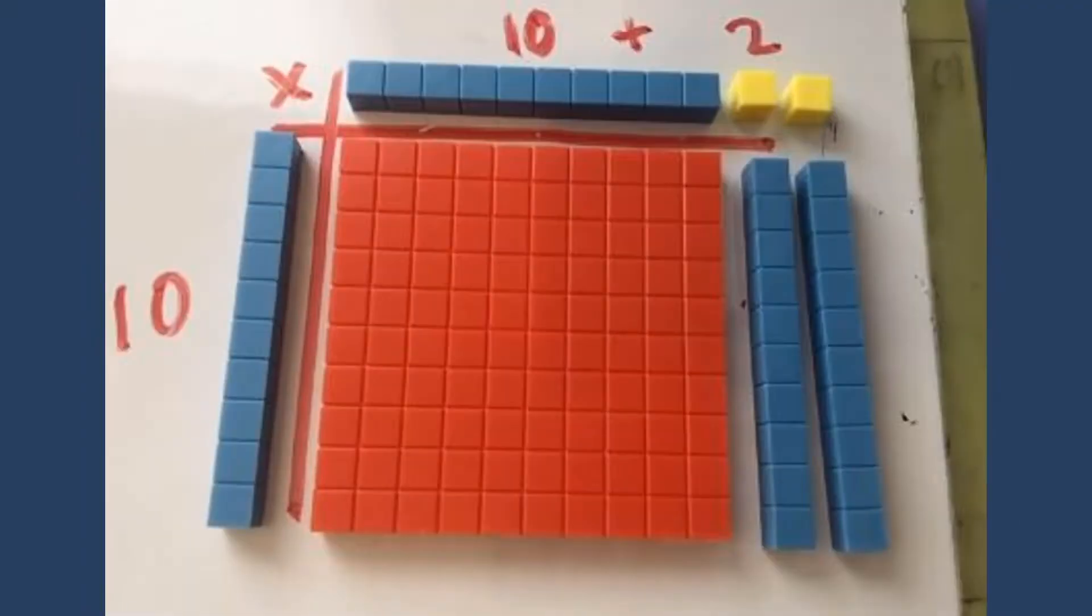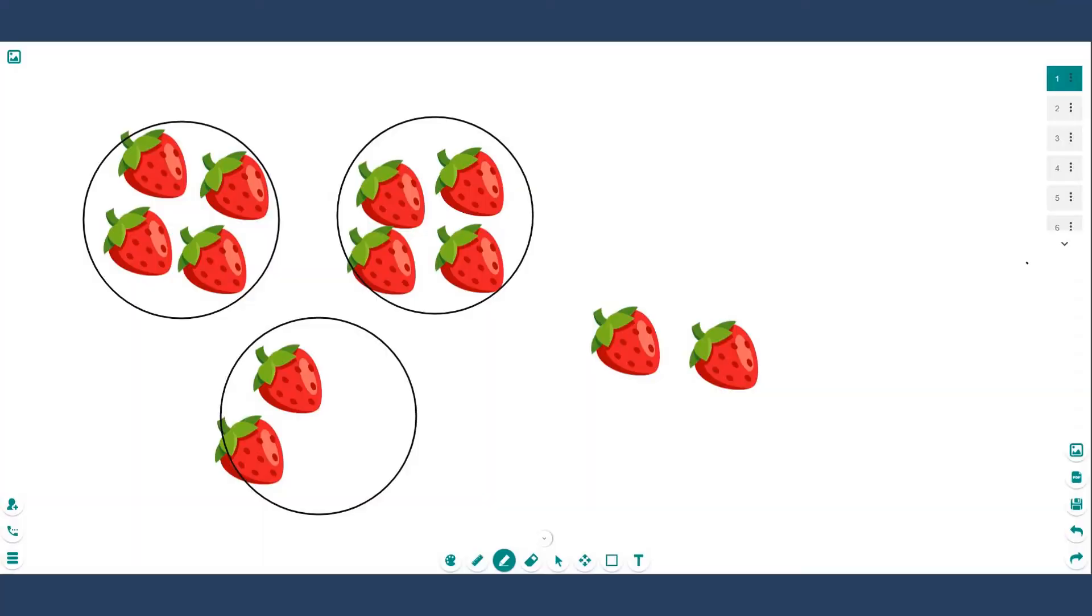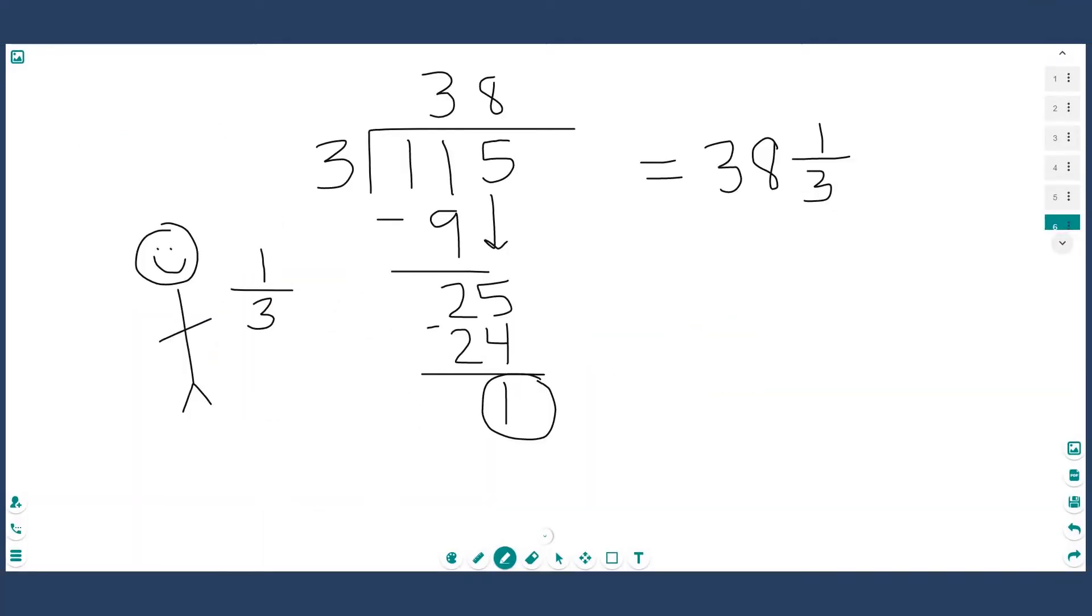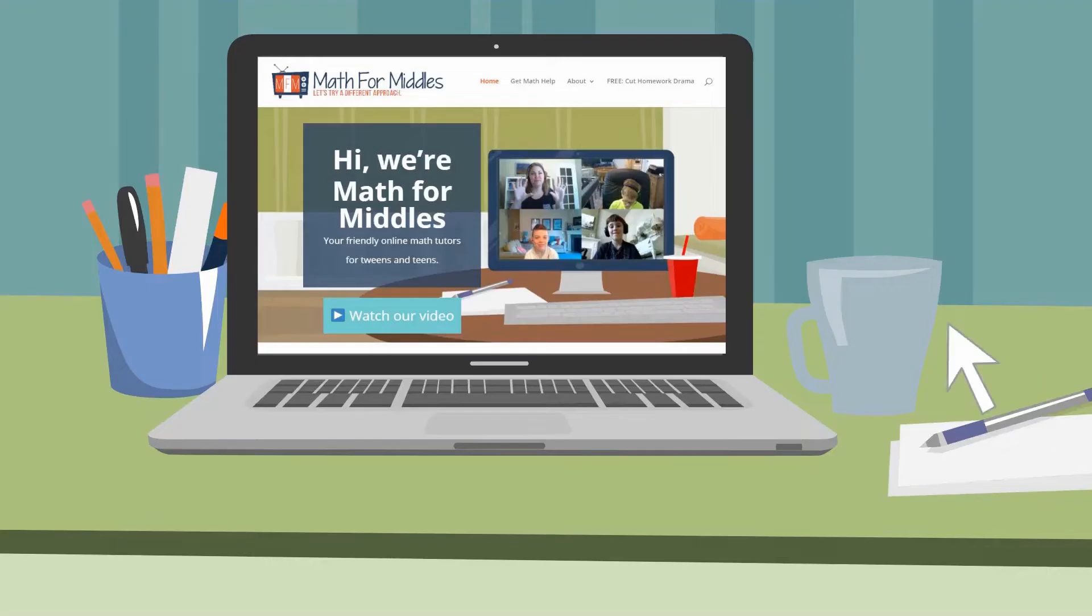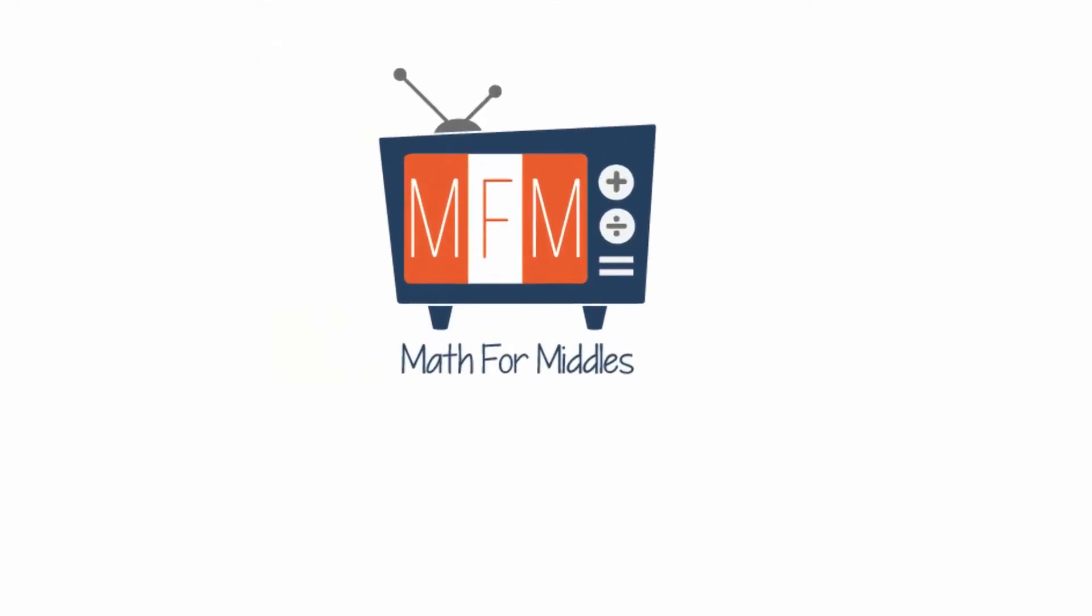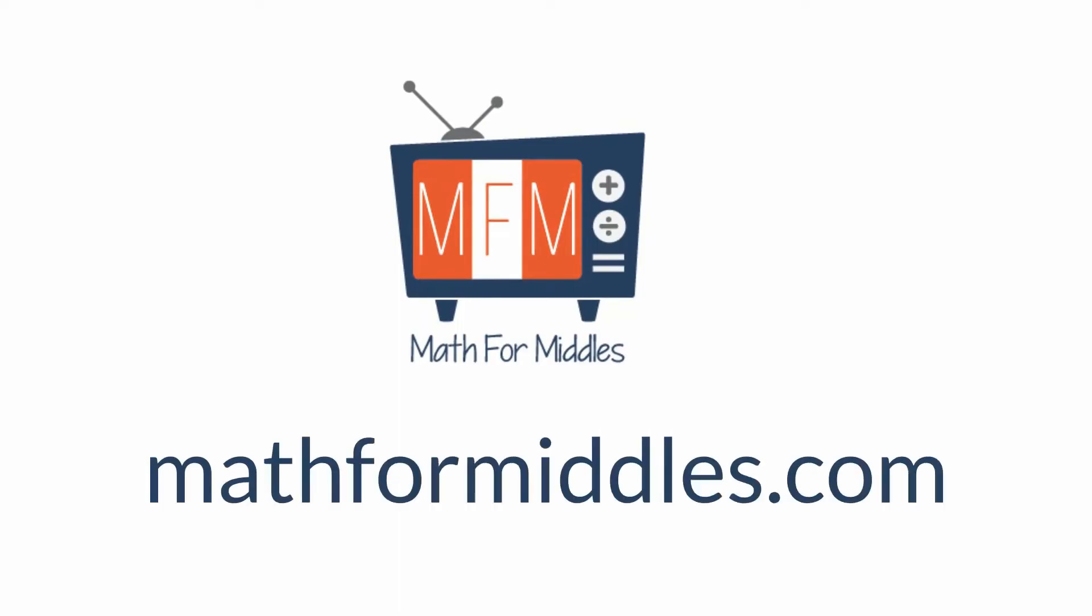Our goal with multisensory math is to remove the need for concrete because it's inefficient. We can move through the CRA method quickly with students and build linkages or bridges for students to develop their number sense. If you have more questions for me, please reach out to us at mathformiddles.com.